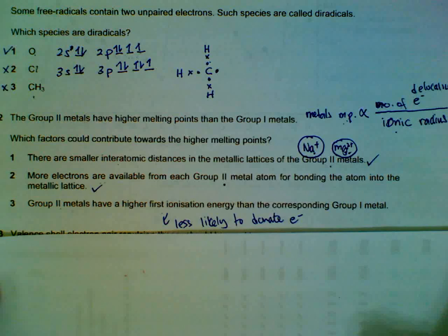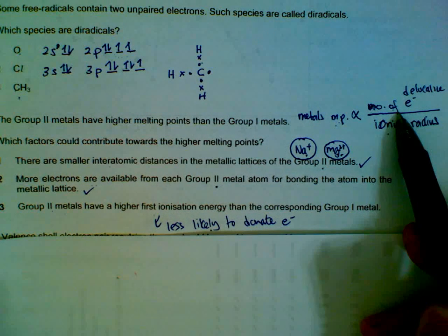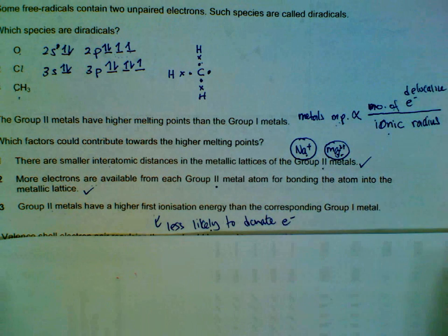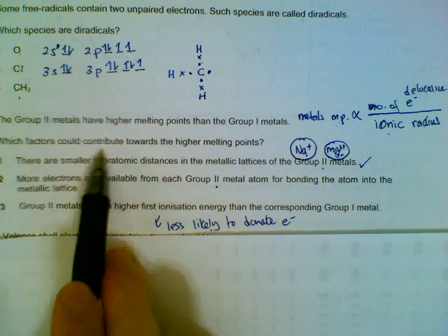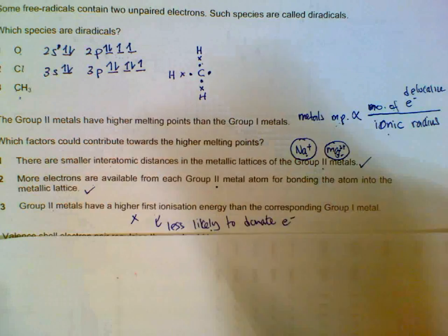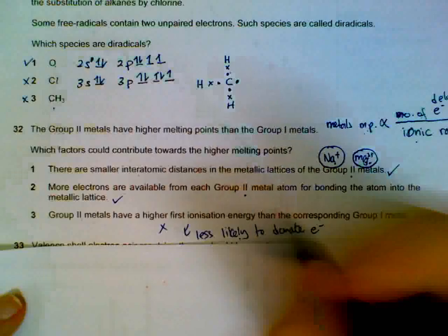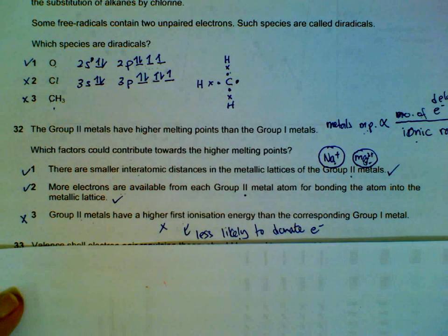And if you're less likely, it means you have less delocalized electrons, and if so, it will not support the idea that group 2 have higher melting point. So this statement doesn't contribute to the higher melting point for group 2. Statement one and two are correct, statement three not correct.